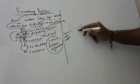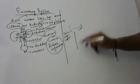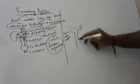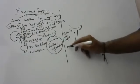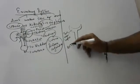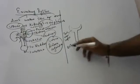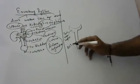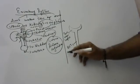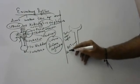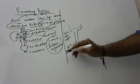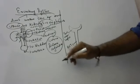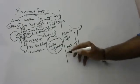This is called the DCT - the distal convoluted tubule. And there is the descending limb going down.